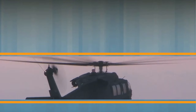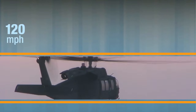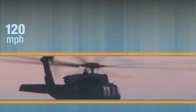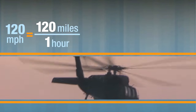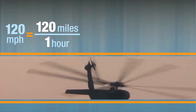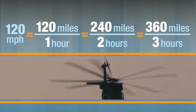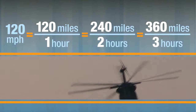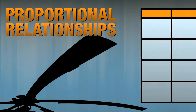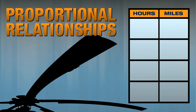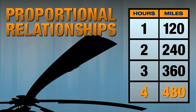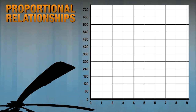The units we are using are miles and hours. 120 miles per hour is a ratio — it means the helicopter can travel 120 miles in one hour. It could travel 240 miles in two hours and 360 miles in three hours. We can put this data in a table, labeling our columns hours and miles. For every hour, we add 120 miles.